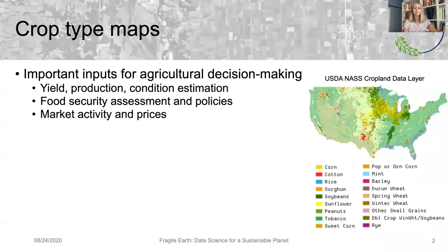Crop type maps give spatial information about where specific crop types are planted, such as the cropland data layer, which is produced by the USDA each year. These crop type maps are important inputs for agricultural decision-making. They're used for estimating crop yields, crop production, and conditions, for assessing food security, making policies, and can inform agricultural commodities market activities as well.